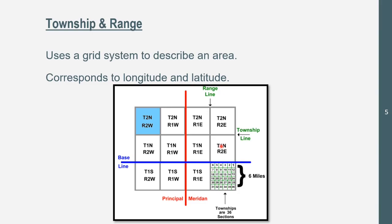Now we've got township and range, which does use numbers. It's a grid system to describe an area that corresponds to latitude and longitude. This blue line right here is called the baseline, and then we've got the principal meridian. We have townships — these squares right here — that have about 36 sections. The horizontal lines are called township lines and the vertical lines are range lines. Different townships are different distances; in this picture it is 6 miles, but they could be 10, 15, or 20 miles depending on the area. These all correspond to this grid system, so they could say go to T1N, R1E — township 2 and range 1.